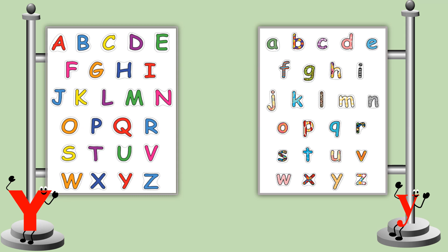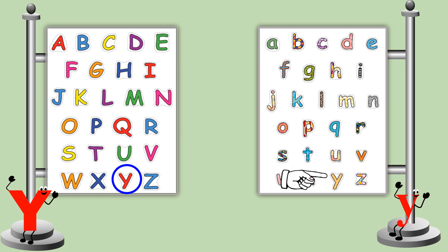Now we identify Captain Y and small y in the alphabet chart. Where is the Captain Y? Here it is. Yes, this is Captain Y. And where is the small y? Here it is. Yes, this is small y.